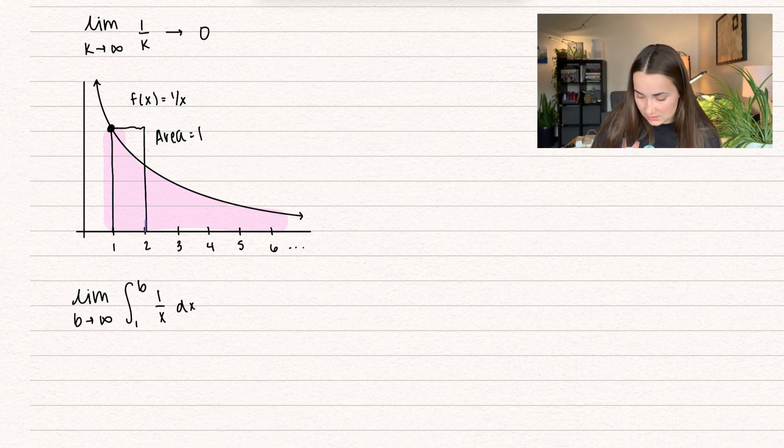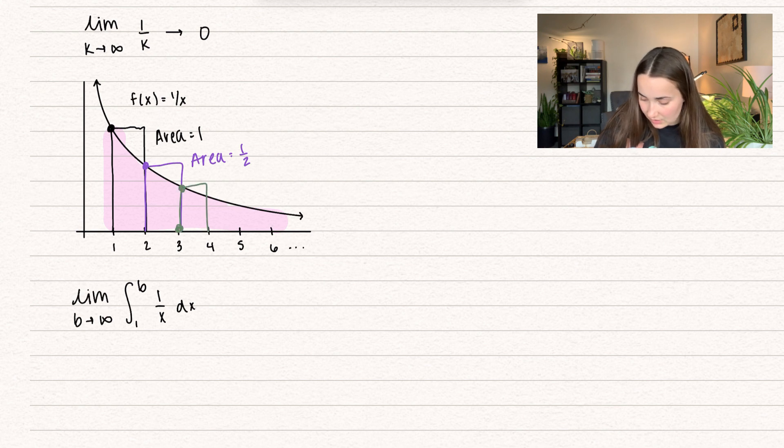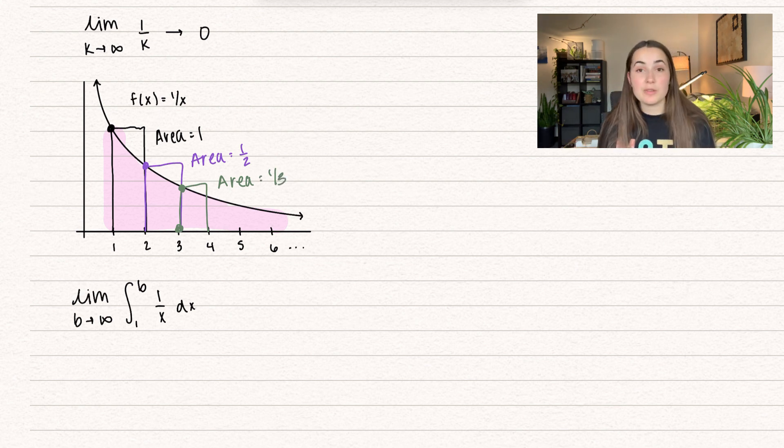Our next rectangle, we're starting at 2, going up to our function, and we're using a rectangle to estimate that area. So that area is equal to 1/2. Now we can keep doing this. So I'm starting at 3, going up to my function. This area is going to be equal to 1/3. How do I know these areas?